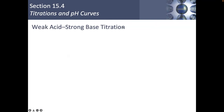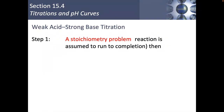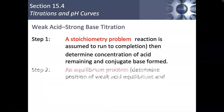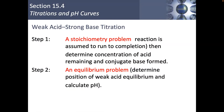Now we can finally talk about the weak acid strong base titration, which is the most common. This totally works with a weak base strong acid titration too — you just make your Henderson-Hasselbalch equation basic, using pKb instead. Step one of any weak acid strong base titration is a stoichiometry problem: determine the concentration of acid remaining, conjugate base form, and conjugate base that has formed. Once you've done that, treat the rest like an equilibrium problem to calculate the pH. Step one is always stoichiometry; step two is always equilibrium.